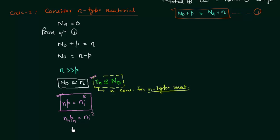We write this as p_p ≈ N_a, specifying it is for p-type material. Applying the mass action law again: n_p · p_p = n_i². Substituting p_p = N_a gives n_p · N_a = n_i². Dividing both sides by N_a: n_p = n_i² / N_a. This is the electron concentration in p-type material.